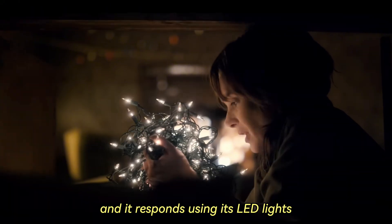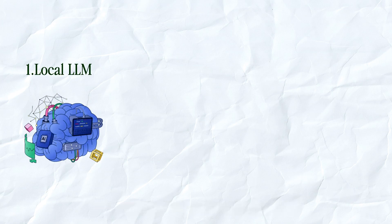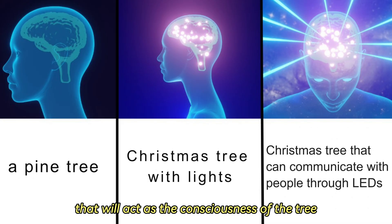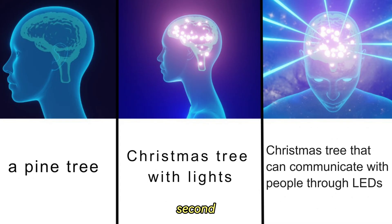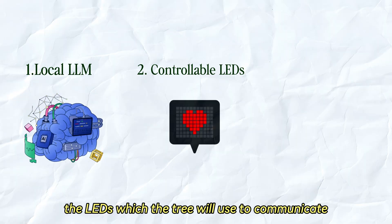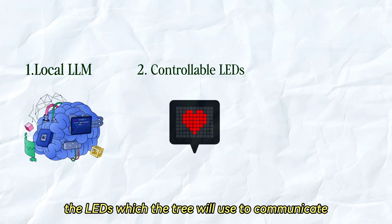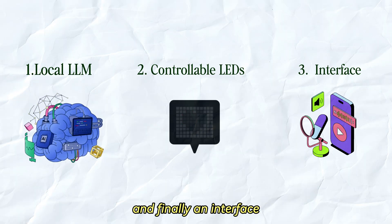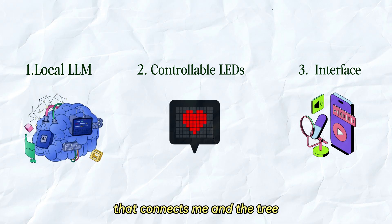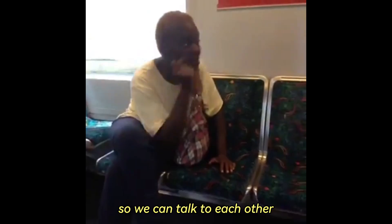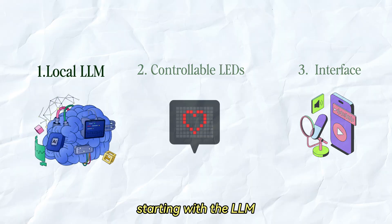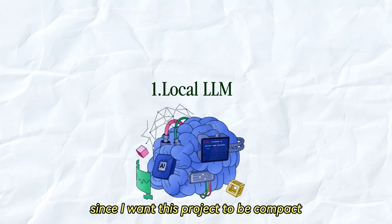To achieve this, I think I need three main components: first, a local LLM that will act as the consciousness of the tree; second, the LEDs which the tree will use to communicate; and finally, an interface that connects me and the tree so we can talk to each other.